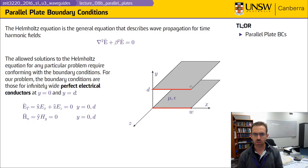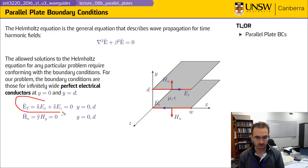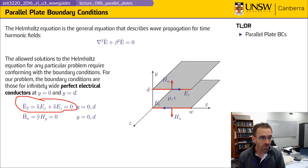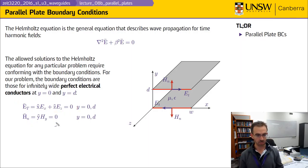At these two interfaces, these field components must be equal to zero. E tangential, shown in purple, has x components and also z components — these must both be equal to zero at the perfect electrical conductors. H sub n, indicated in red, must also be zero at the perfect conductors. Away from the conductors, I can have non-zero values for E sub x, E sub z, or H sub y, but at the interfaces these components must be equal to zero.